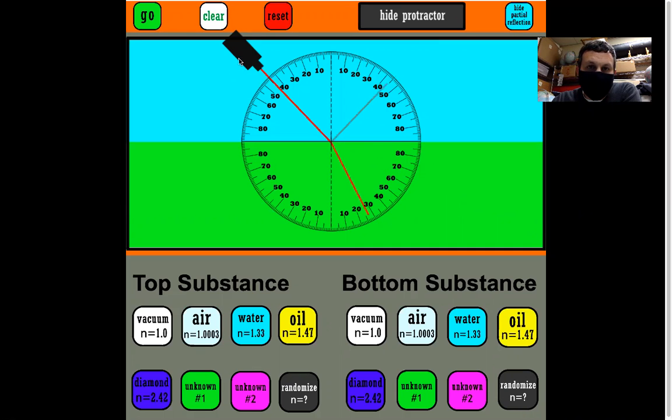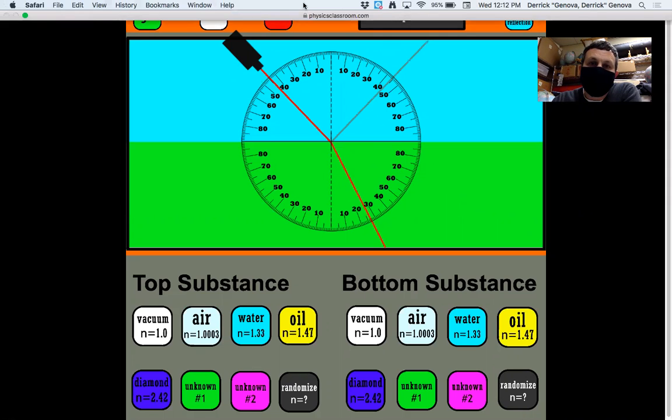When I do this, I get some refraction. In water, the angle of incidence is about 45, but in unknown number 1, it is about 26. So we ask: is this a thicker substance than water, or a thinner substance than water?